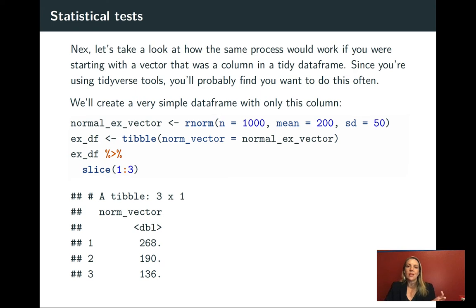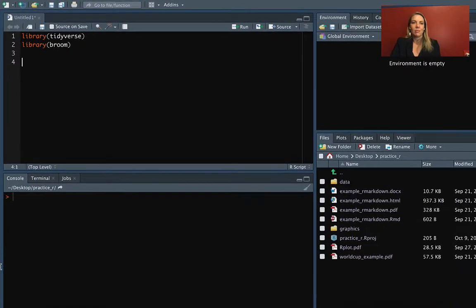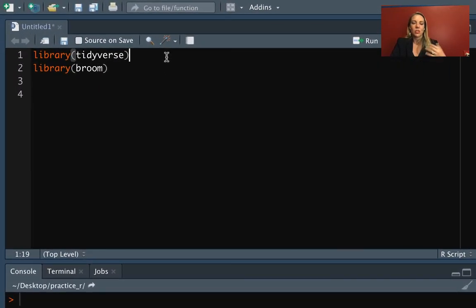Let's start again with that same idea of having a vector where we've got a random draw of a thousand values from a normal distribution with a mean of 200 and the standard deviation of 50. In this case, we're going to put that into a data frame, so it'll be a single column in a data frame.